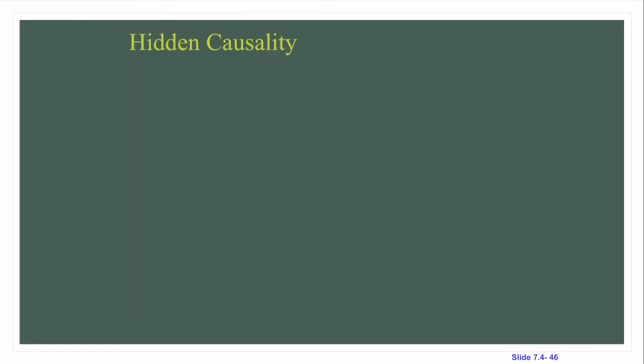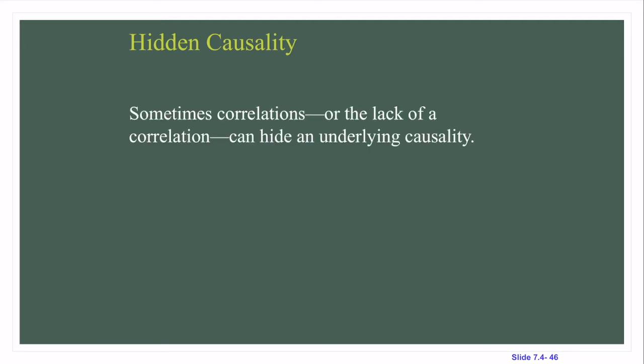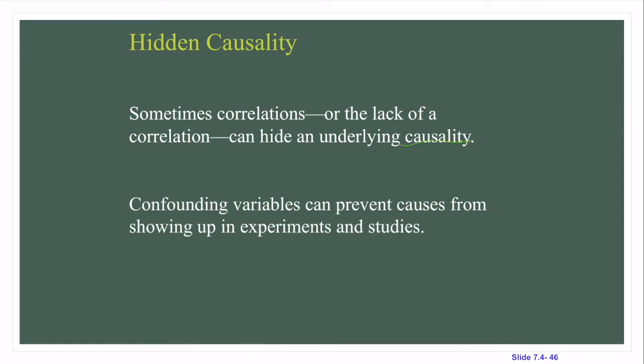Sometimes correlation — or the lack of correlation — can hide an underlying causality. Confounding variables can prevent causes from showing up in experiments and studies.